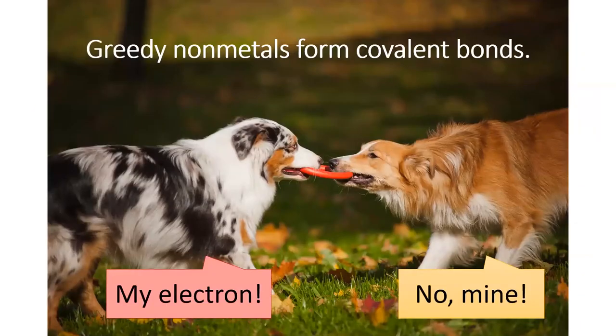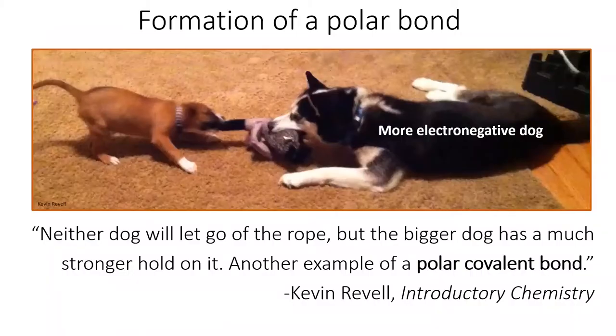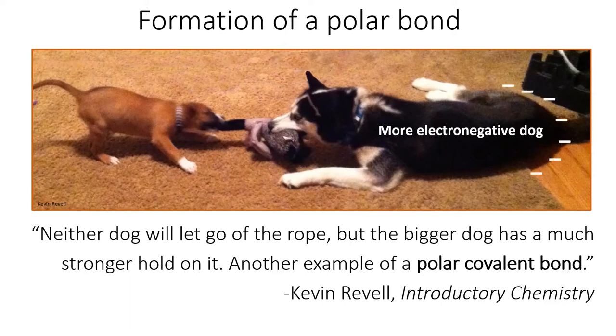Recall that two atoms form a covalent bond because both atoms need the extra electron to fill up their valence shell. When one of the atoms wants the electron more strongly than the other atom does, it forms a polar covalent bond. This means that the more electronegative atom will have a slightly negative charge, and the other atom will have a slightly positive charge. It is customary to draw a dipole arrow from the positive to the negative end of the molecule.